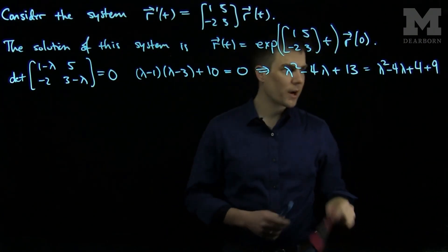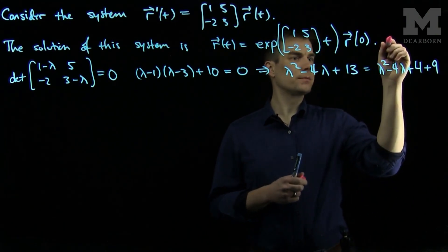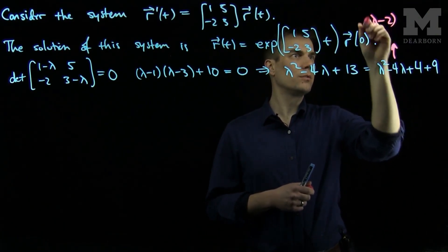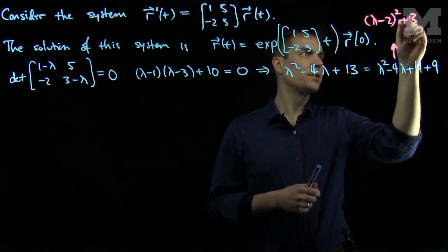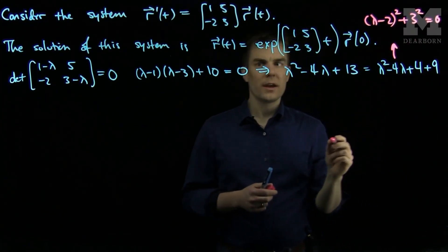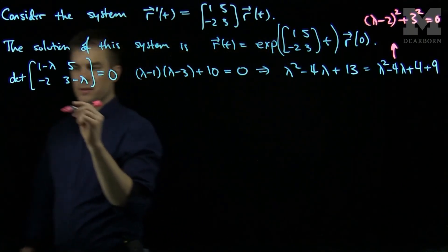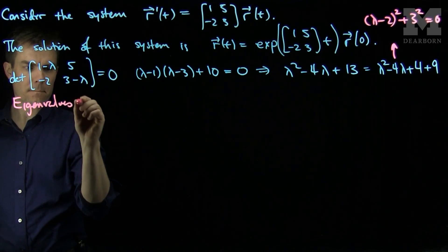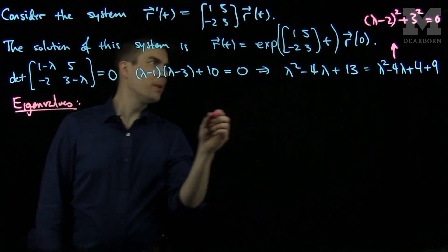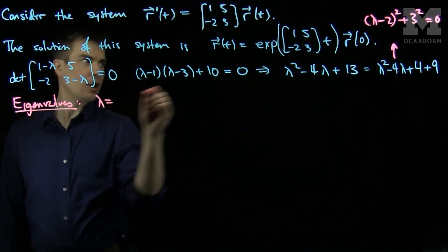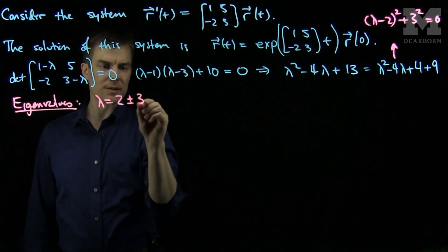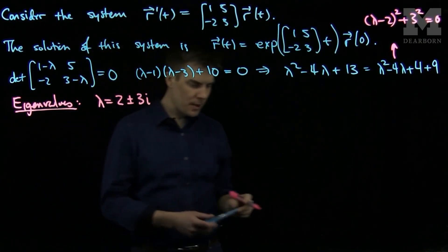We can write this as (λ-2)² + 3² equals 0. From this, we can see that our eigenvalues will be λ = 2 ± 3i. What we do is find the eigenvector for the eigenvalue with the negative sign.